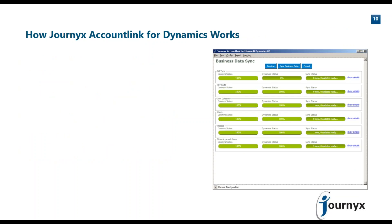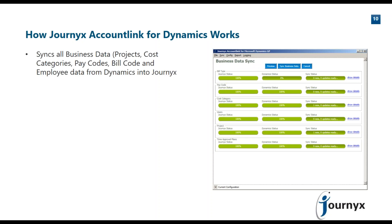The second component is a tool called Journix Account Link for Dynamics. This applies to any flavor of Dynamics — whether GP, AX, NAV, or SL. It's a bi-directional integration with your Dynamics ERP solution. We can sync in what we call your business data: any of your high-level projects, cost categories, pay codes, bill codes, and employee data and related attributes can all flow in from your Dynamics ERP solution into Journix.